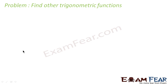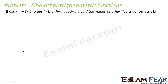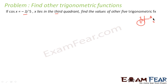We have to find the other trigonometry functions. It says cos of x is minus 3 by 5 and x lies in the third quadrant. We have to find the values of the other five functions. We see: all, sin, tan, cos. This is the third quadrant and here cos is negative.